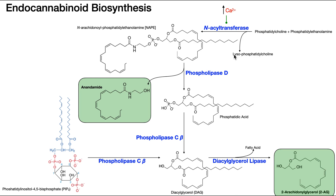That not only gives you this sort of waste product, lysophosphatidylcholine, but it gives you the precursor to both of these endocannabinoids, which is N-arachidonoyl phosphatidylethanolamide. And again, it's named this way because on this nitrogen — the N — you now have this arachidonoyl group, which is arachidonic acid. Understand that in places, I've cut off part of it just for the sake of space.